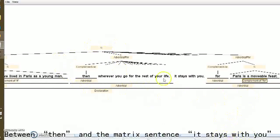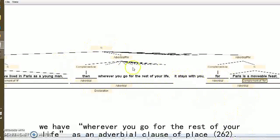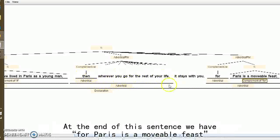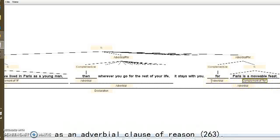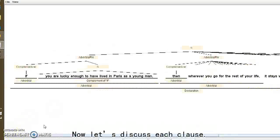Between then and the matrix sentence, it stays with you, we have wherever you go for the rest of your life as an adverbial clause of place. At the end of this sentence, we have for Paris is a movable feast as an adverbial clause of reason. Now, let's discuss each clause.